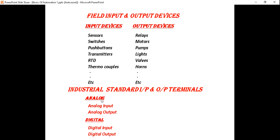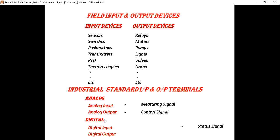Industrial signals: analog input — measuring signal; analog output — control signal; digital input — state signal; digital output — command signal.